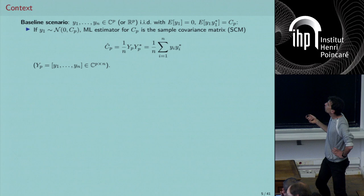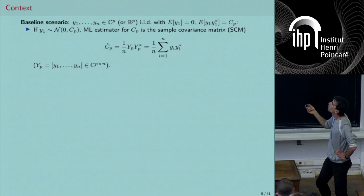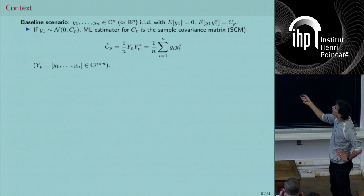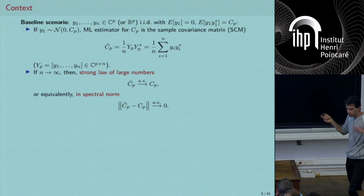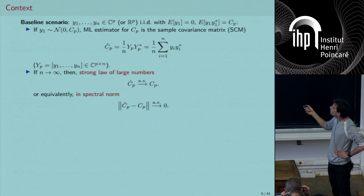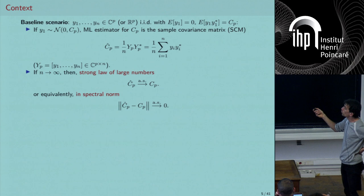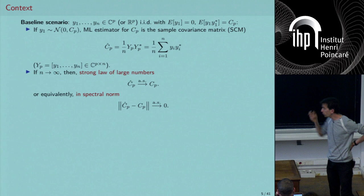We want to do this because of the law of large numbers: Ĉ_p converges almost surely to C_p when n goes to infinity. And in particular, for any matrix norm, the difference between those two objects tends to zero as n goes to infinity.